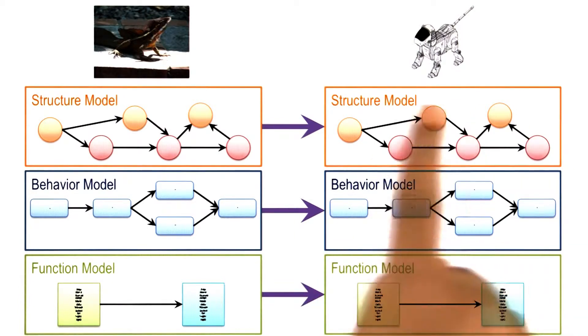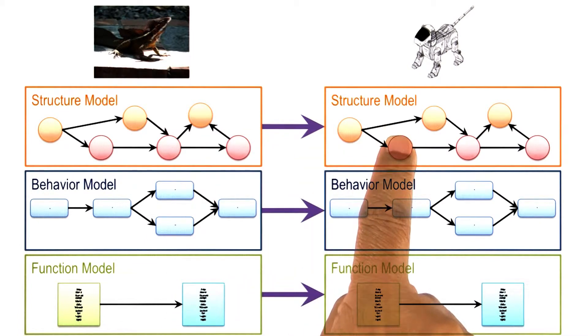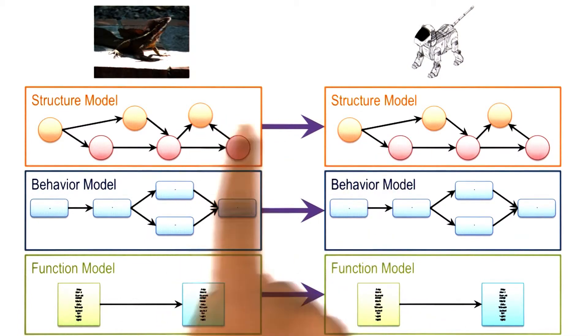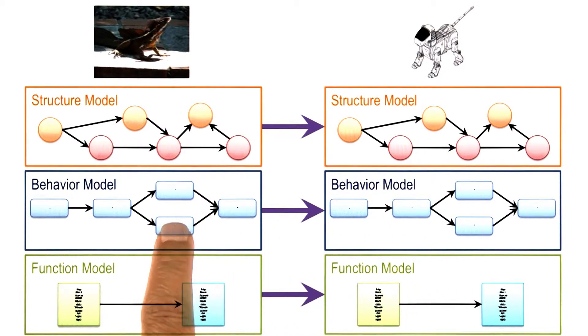This is sometimes called compositional analogy. We first do mapping at the level of structure, and that mapping at the level of structure helps us transfer some information. That in turn allows us to transfer the information at the behavioral level. Once we have transferred information at the behavioral level, we can climb up this abstraction hierarchy and transfer information at the functional level.